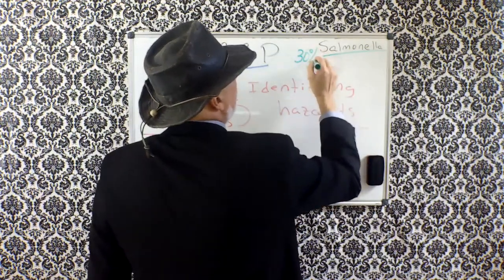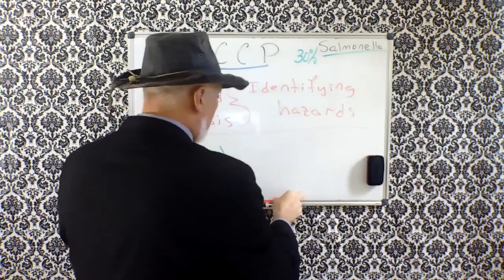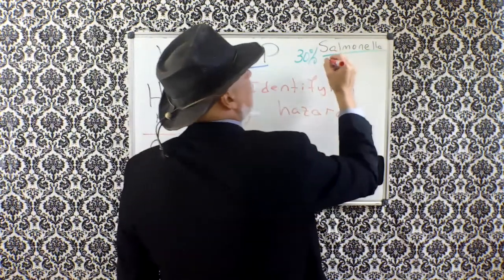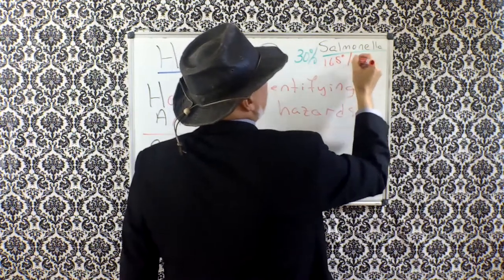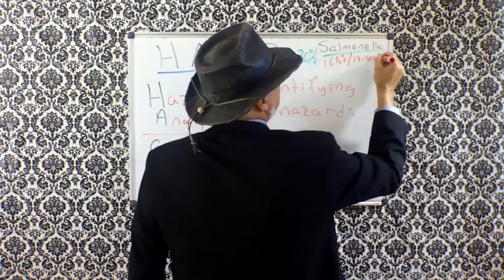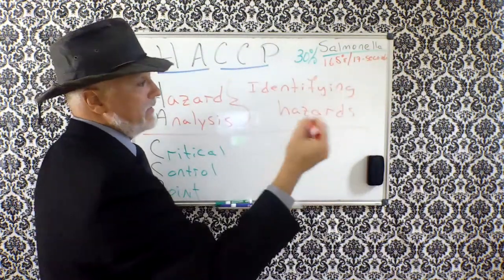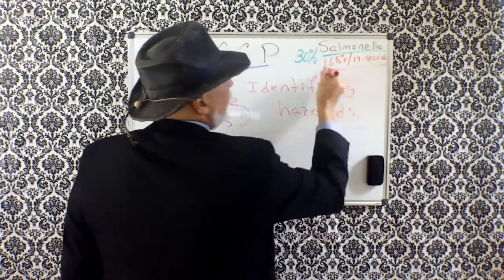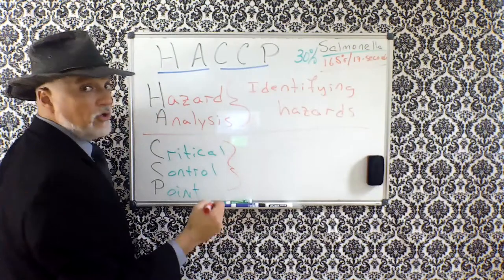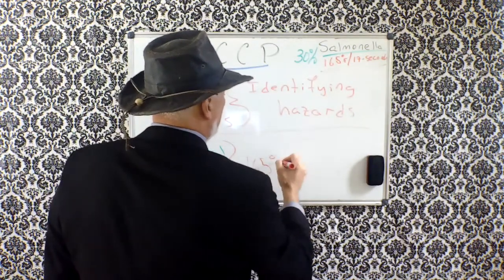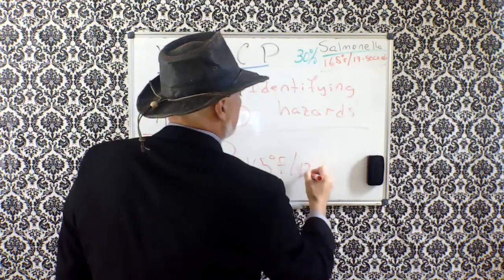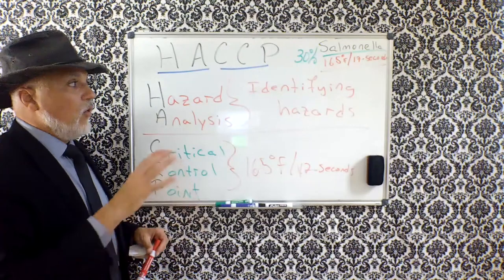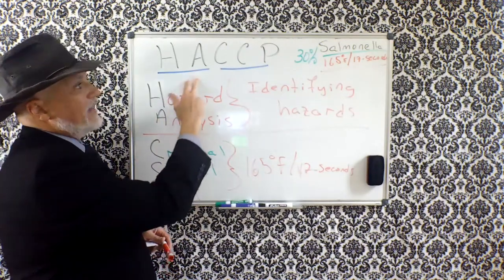We already know poultry is a big carrier of salmonella, to the tune of more or less 30%. We also already know that in order to reduce or eliminate salmonella or the pathogens in chicken, we need to cook it at 165 degrees Fahrenheit, 17 seconds. And if you remember, once upon a time it was 15 seconds if you've been around in the industry long enough. So now, this 165 for 17 represents our critical control point.